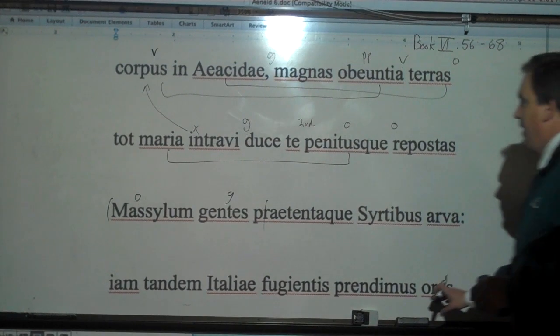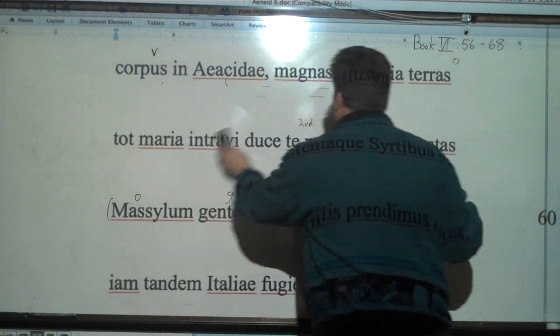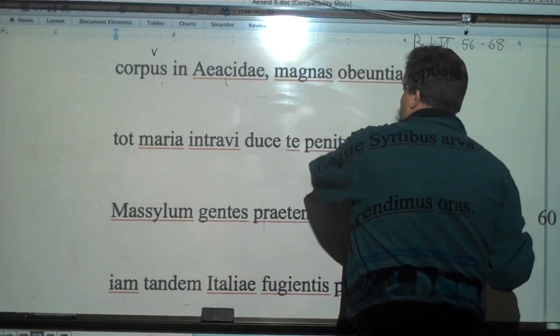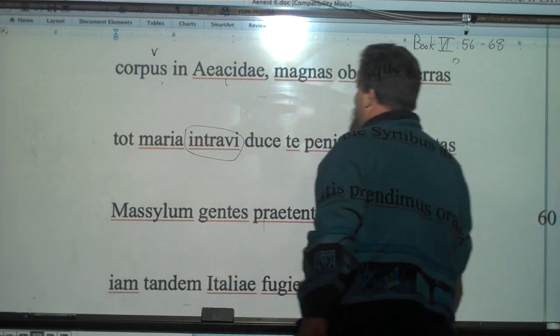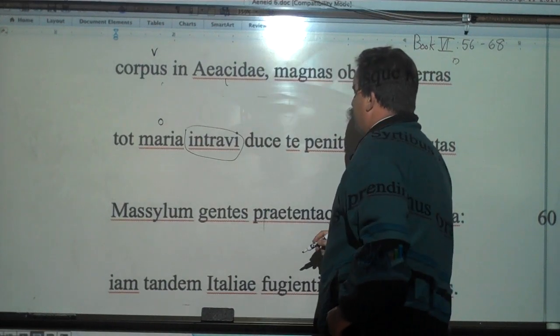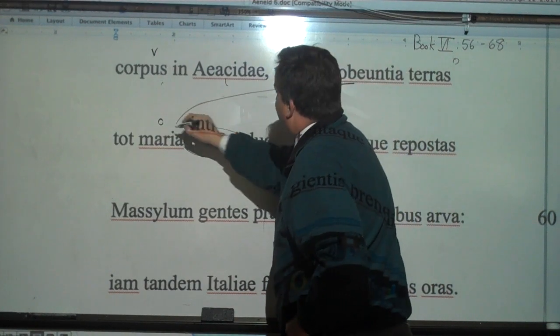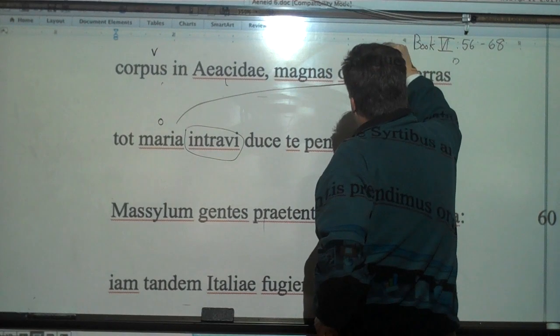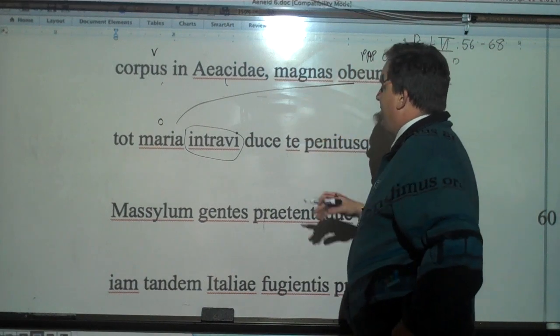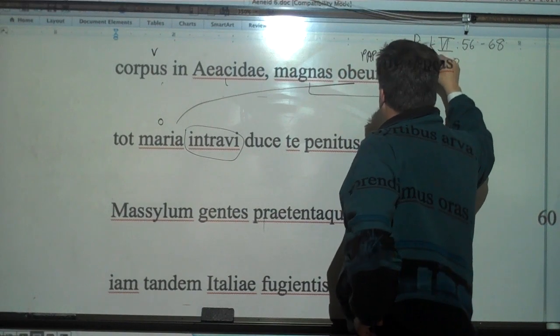And then we have here, magnas obeuntia terras, tot maria, intravi, duce te, penitus reposita, et cetera. So let's find our verb here. Intravi. I entered. And let's go with maria first. Tot maria, so many seas, and this is obeuntia, approaching. This is a PAP, neuter accusative of obeo, to go to or approach. So I have entered so many seas approaching great lands.